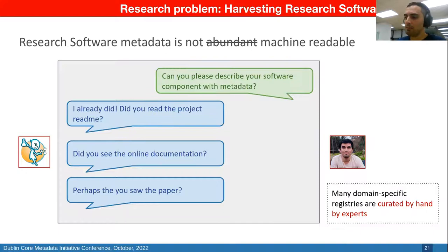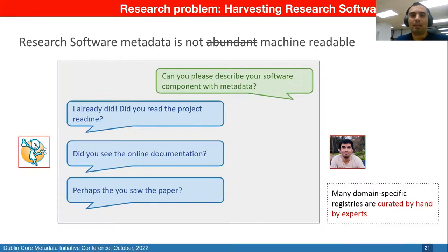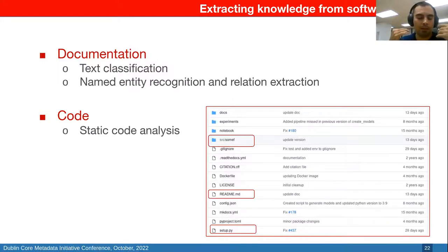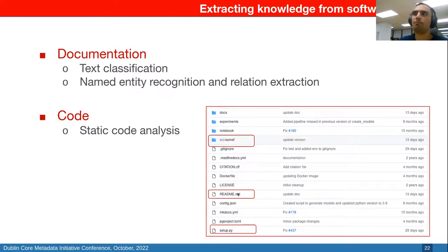For many domain-specific registries, a lot of metadata is curated by hand by experts — a huge effort. So what we're developing at my group is creating new techniques that extract some of this metadata directly from the documentation and code. A repository in GitHub or GitLab usually comes with a lot of documents: a README file with the title, what the software does, keywords, and so on. We apply state-of-the-art techniques to retrieve this metadata. I have a tool called SOMEF — the Software Metadata Extraction Framework — that given an open source repository, does README analysis, file exploration, and mining of the GitHub API.